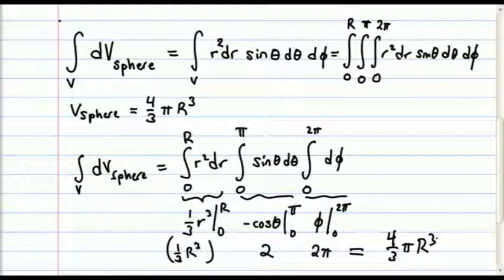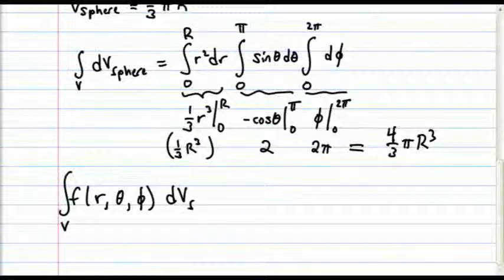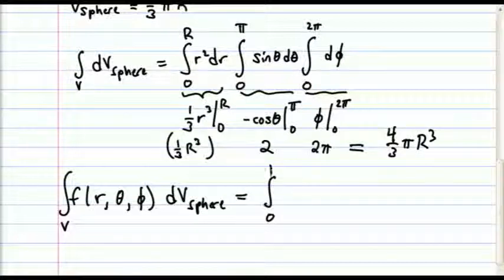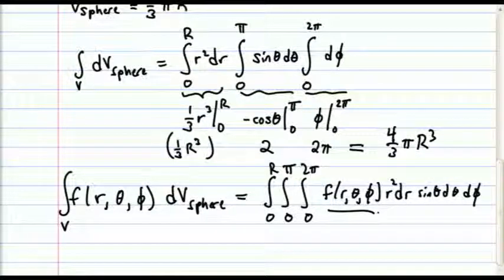And now, imagine you have a function that actually varies, either is a function of r, θ, or φ, that you then have to integrate over the volume of a sphere. Well, that boils down to doing a triple integral from 0 to the radius, 0 to π for the θ angle, and 0 to 2π for the φ angle, of this function of r, θ, and φ, over r² dr, sine θ dθ, dφ. Plug in your function, do your integrals, and you get your answer. And I'll leave that as an exercise for the student.